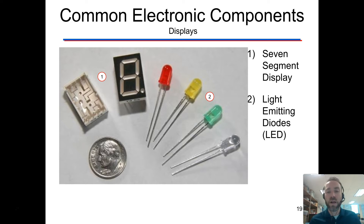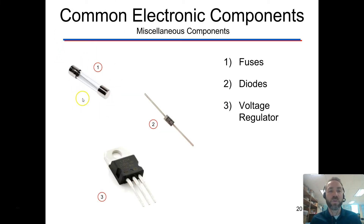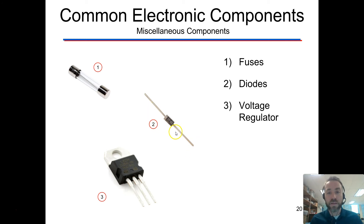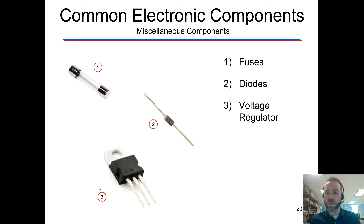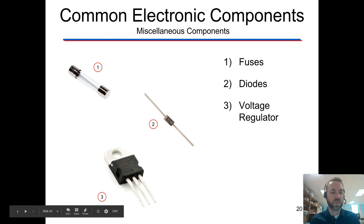Here are a couple of other components you're going to see throughout the year. You've already seen LEDs. This is a seven-segment display for displaying numbers — we'll control those later in the year, second semester specifically. We've got a fuse; there's one inside your DMM — those are what you've blown in most of them, but it helps preserve the device. A diode is going to help control the flow of electricity — we only really see those once or twice throughout the year. And a voltage regulator — same idea — it makes sure voltage stays below a certain level, and we'll see that once or twice throughout the year.